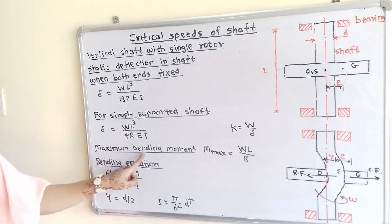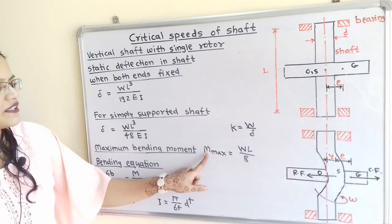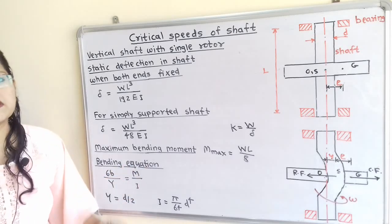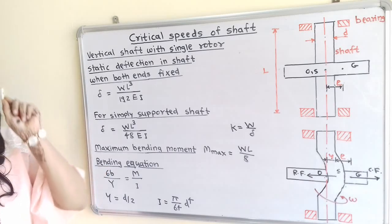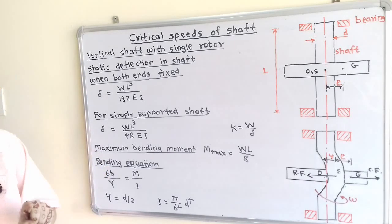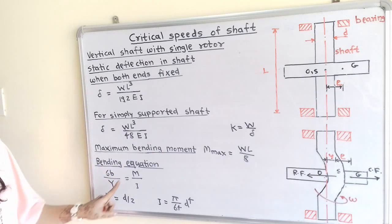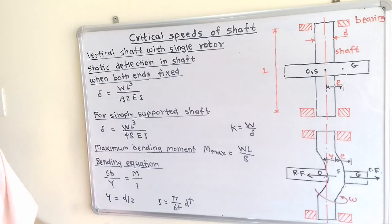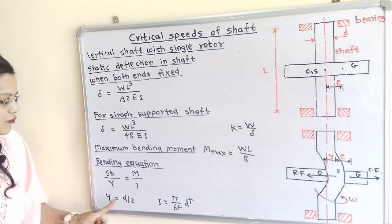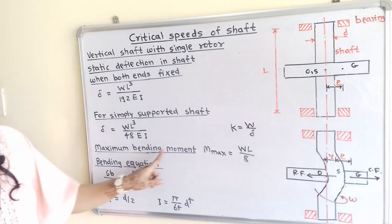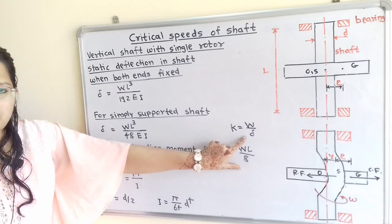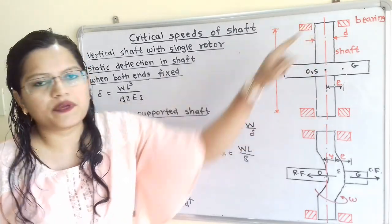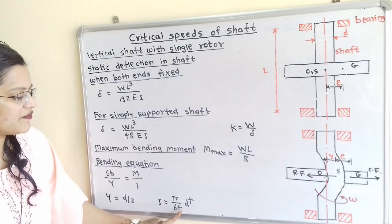The maximum bending moment M_max = WL / 8. For the bending equation: sigma_B / Y = M / I, where sigma_B is bending stress, Y = D/2 (D being the shaft diameter), M is the bending moment (WL/8), and I is the second moment of area equal to pi/64 times D raised to 4.